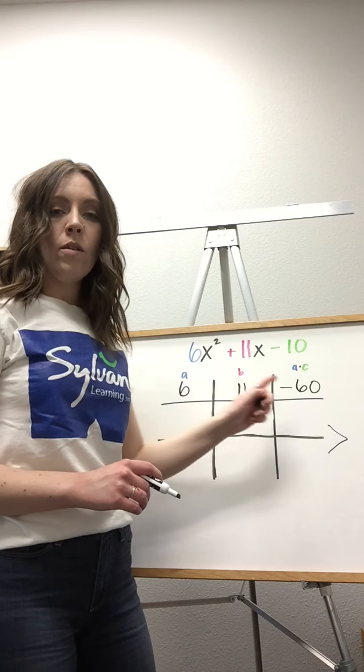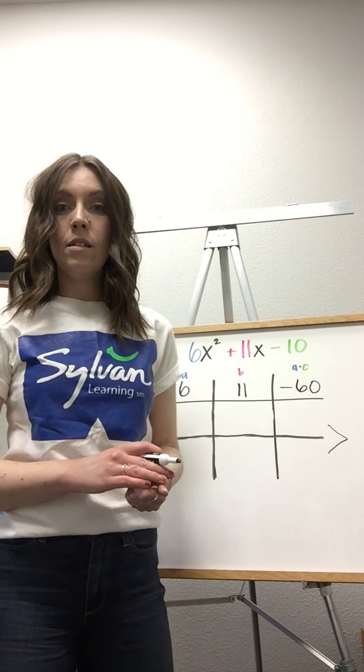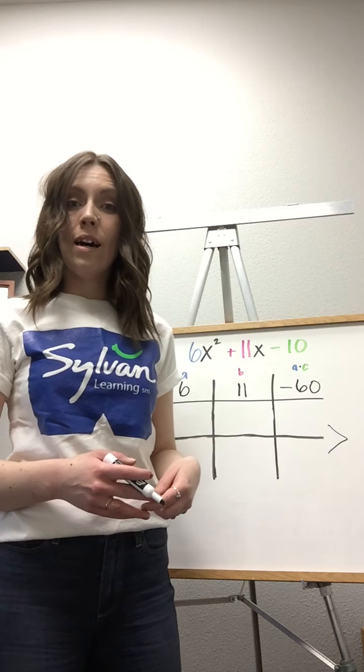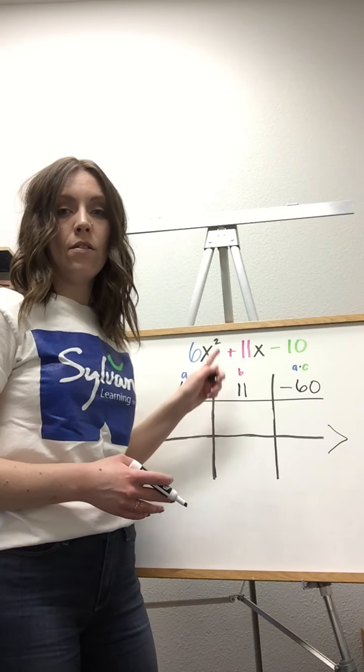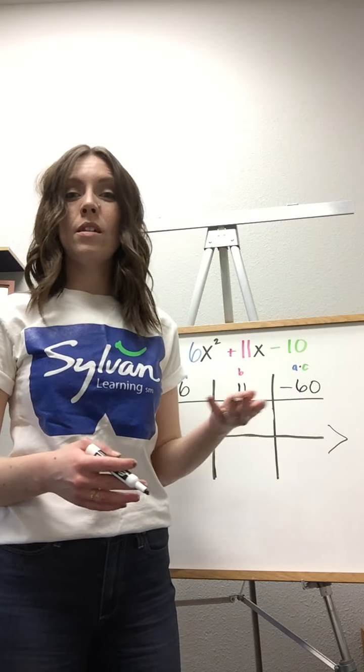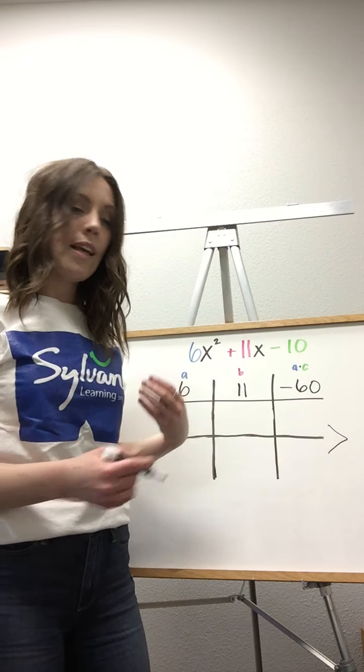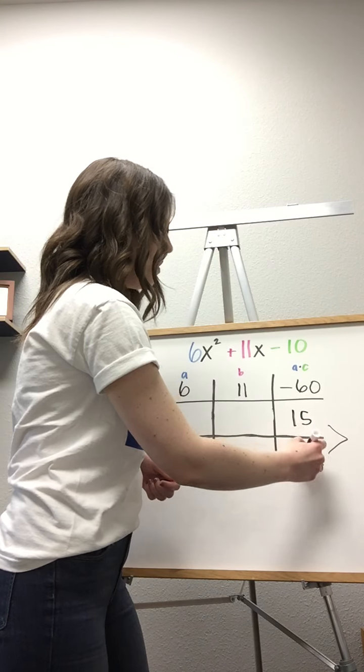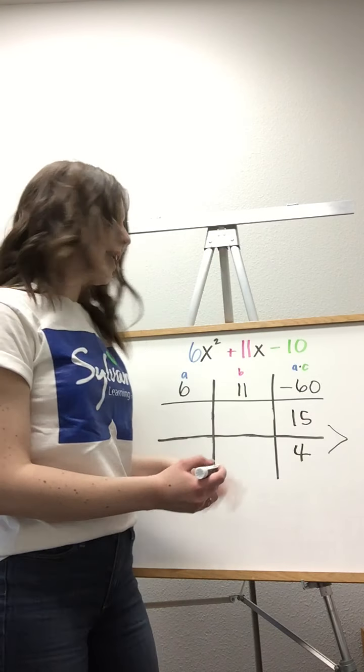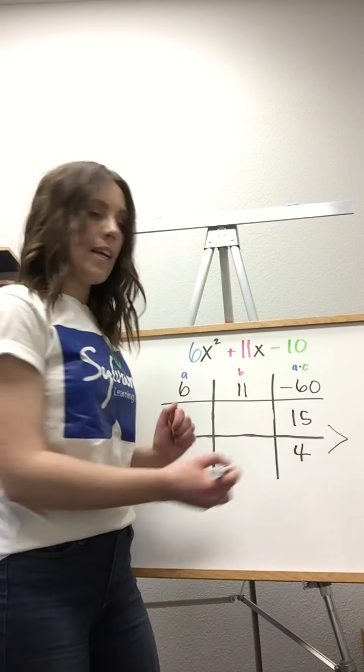Now, I know if two numbers are being multiplied to make a negative, that I'll need one negative and one positive number. But, if my sum is positive, then the bigger of those two numbers needs to be positive. In this case, 15 times 4 gives me 60, but in order to make it negative 60, I'll change that to negative 4.